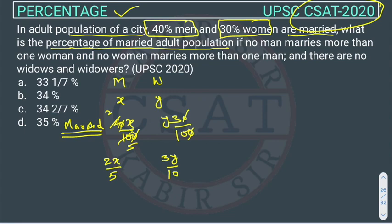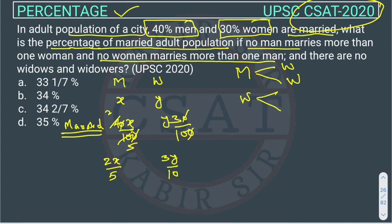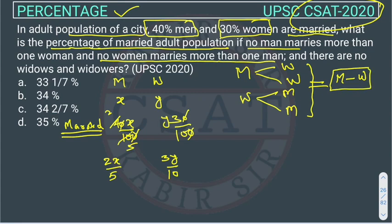The conditions given are: no man marries more than one woman, and no woman marries more than one man. So if there is one man, he needs exactly one woman for marriage. This is the only condition existing in society.